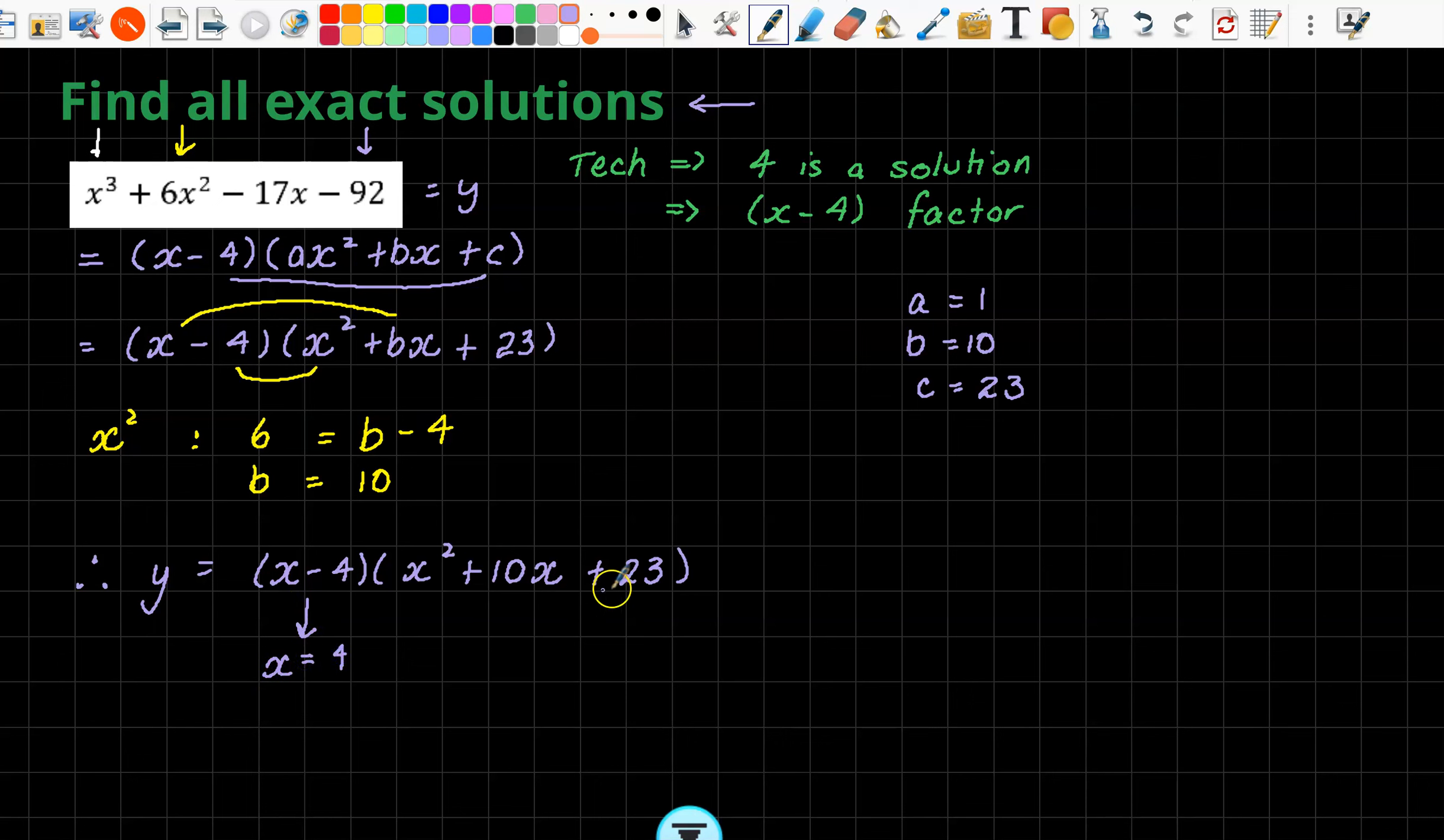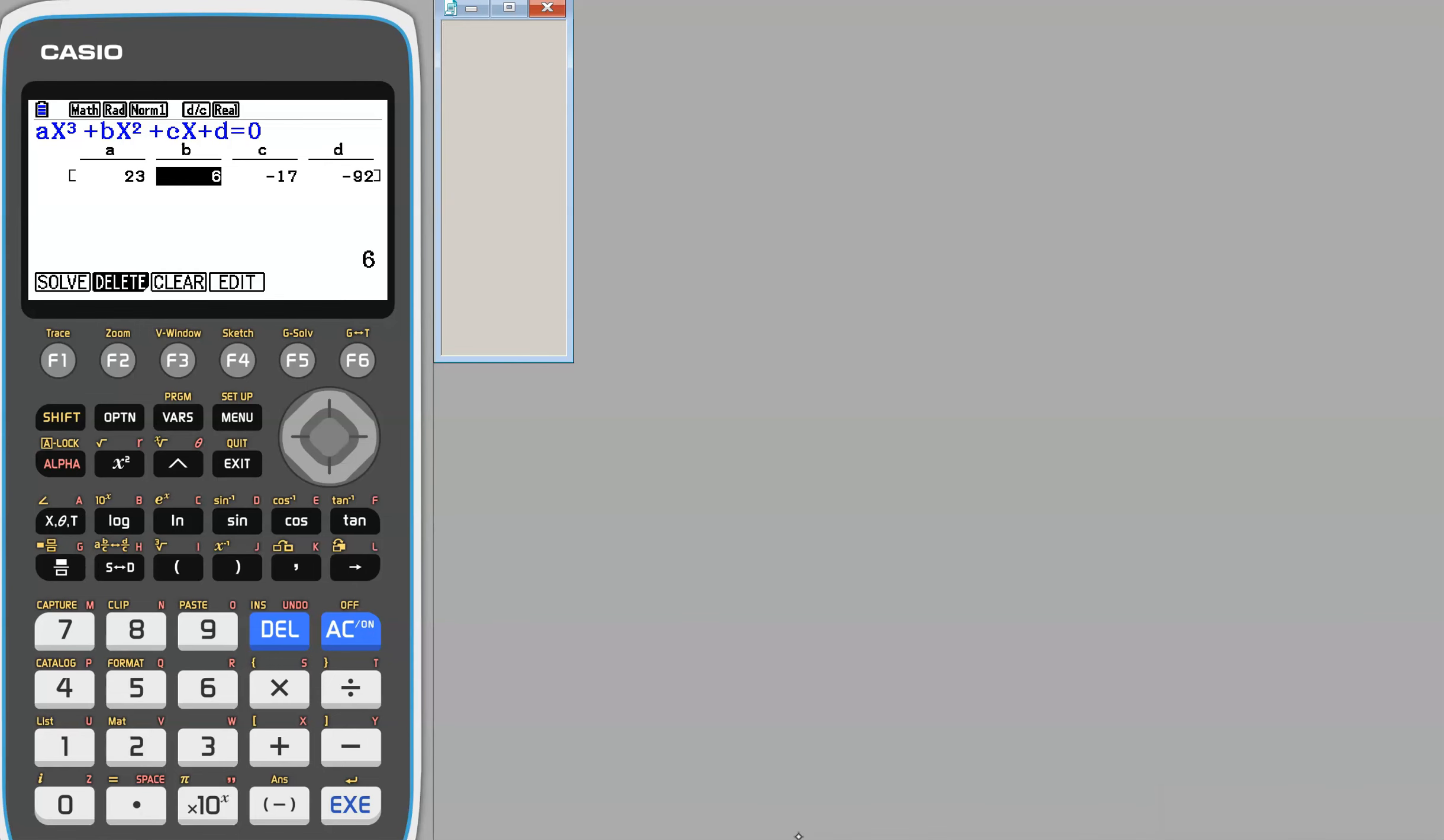So therefore, we have our function. Let's call it y. We know that this is now going to be x take 4, x squared, 10x plus 23. But we haven't finished because the question is asking us, find all exact solutions. So from here, this gives us the exact solution of 4. How do we get an exact solution of a quadratic? I'm looking at this. I can't factorize it. So I'd have to use the quad formula. But if it didn't say use algebra, look at our technology.